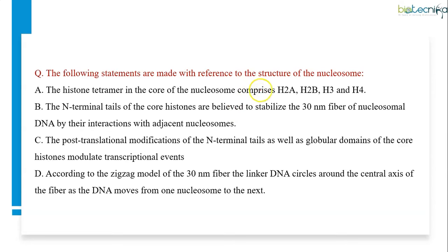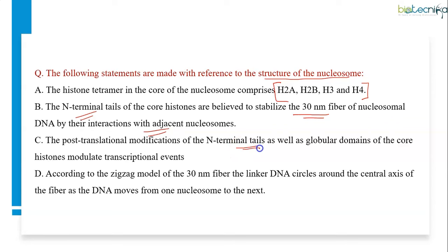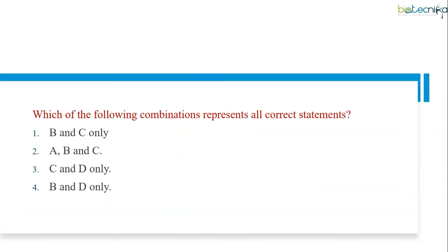The next question involves statements made with reference to the structure of nucleosomes. Statement A: the histone tetramer in the core of the nucleosome comprises a certain number of histone proteins. Statement B: the N-terminal tails of core histones stabilize the 30nm fiber of nucleosomal DNA by their interaction with adjacent nucleosomes. Statement C: post-translational modification of the N-terminal tail as well as the globular domain modulates transcription. Statement D: according to the zigzag model of the 30nm fiber, the linker DNA circles around the central axis as the DNA moves from one nucleosome to the next. Identify the correct combination of statements.